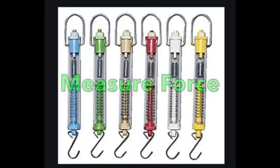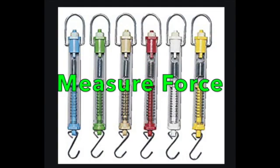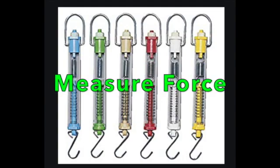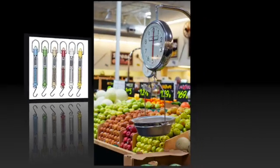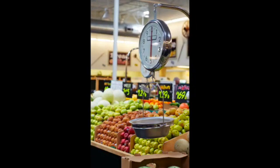A spring scale is a tool used to measure force. Force is a push or a pull. When an object hangs from the scale, the force of gravity or weight is measured. When the spring scale is used to pull an object, it measures the force needed to move the object. Either way, the base unit is called a newton. You're probably familiar with a different version — this is a spring scale you use at the grocery store.